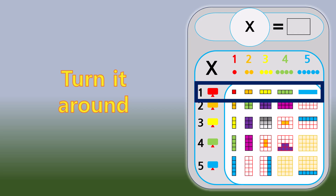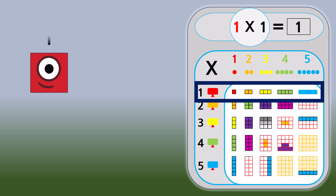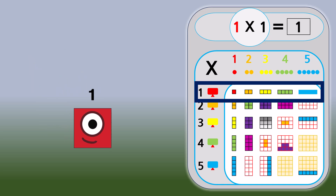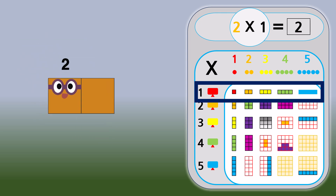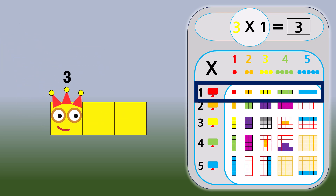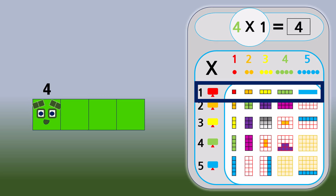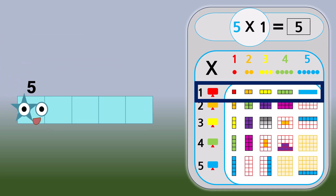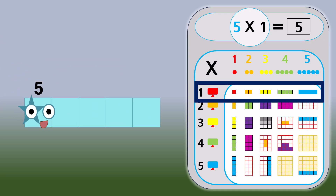Turn it around. 1 times 1 equals 1. 2 times 1 equals 2. 3 times 1 equals 3. 4 times 1 equals 4. 5 times 1 equals 5.